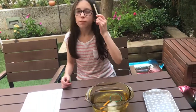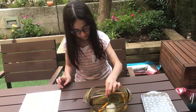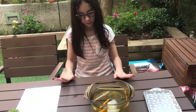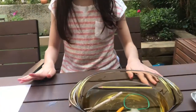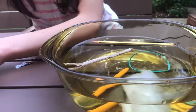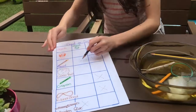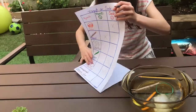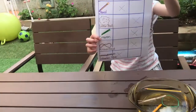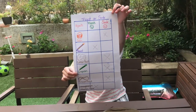The last object in our experiment is a wooden stick, and just like the pencil, the wooden stick floats. Interesting connection between these two — and that was the result of our experiment!